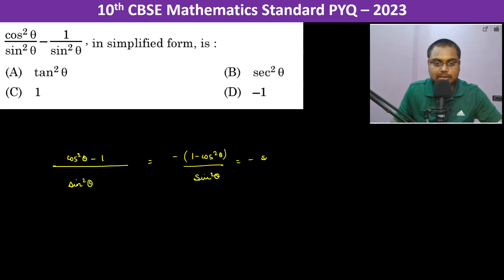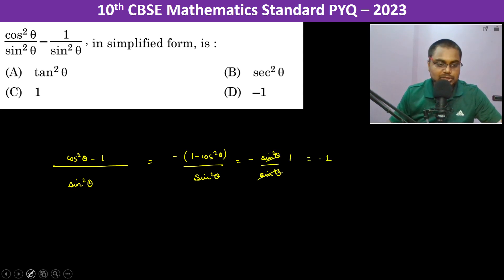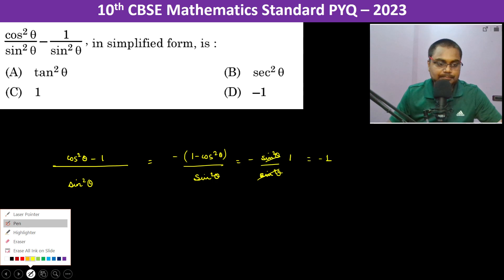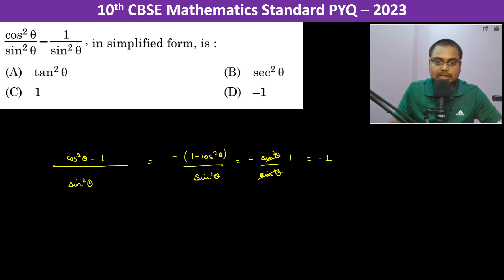This becomes minus of sine squared theta divided by sine squared theta, so they cancel out and the answer becomes minus 1. Thank you.